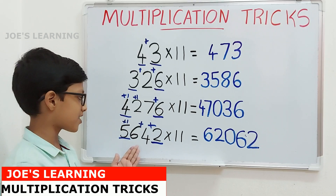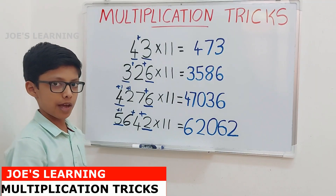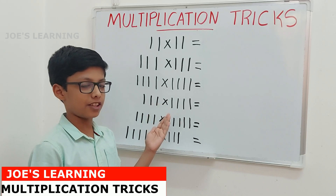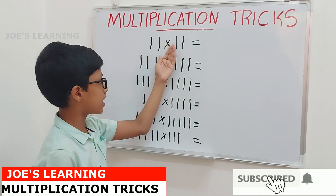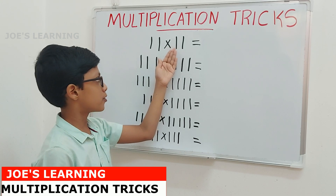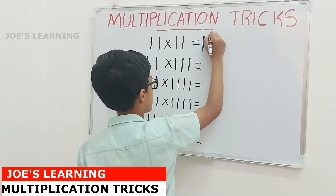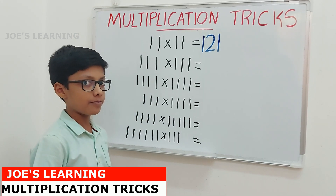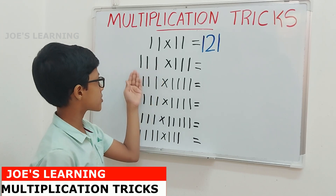So 5,642 multiplied by 11 equals 62,062. In this way, we can easily multiply any number by 11 quickly. Now let us move on to our next multiplication trick. Let us find the product of 11 multiplied by 11. We must first find the number of digits in both numbers. In this case there are 2 digits, so we keep increasing until we reach 2, then start decreasing until we reach 1.